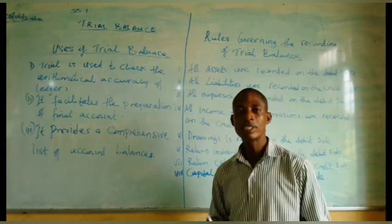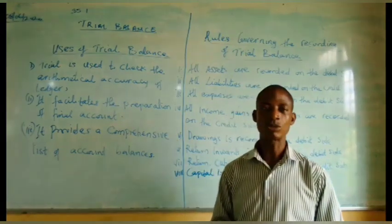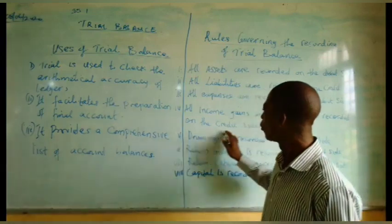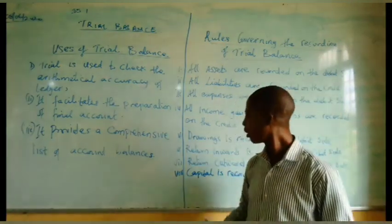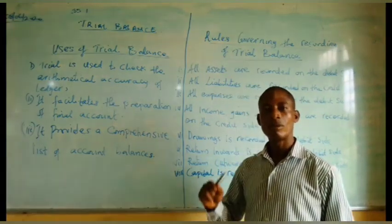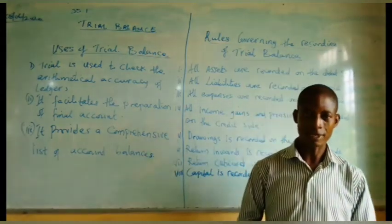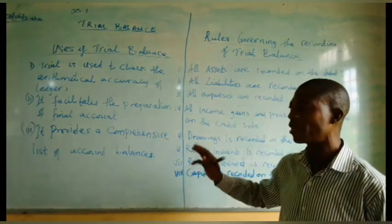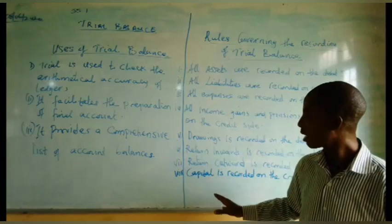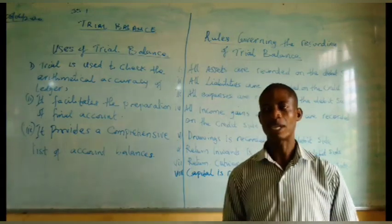We also have drawings — that is, when the owner of the business draws cash or goods for personal use. The balance in the drawings account will be recorded on the debit side of the trial balance. We also have return inwards, which is also known as sales returns; the value of return inwards will be debited to the trial balance. Finally, capital will always be credited to the trial balance.